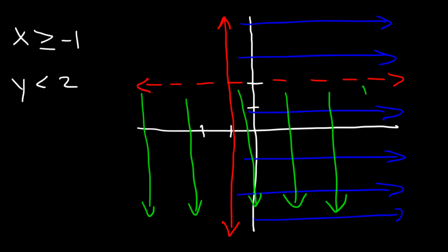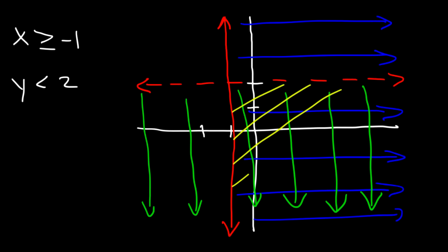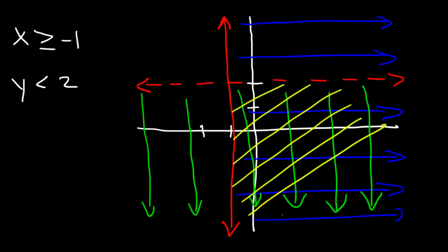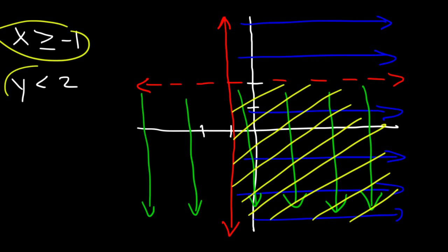We need to choose a region where the equation is true for both. The answer is the region where both colors are shaded. The equation is true for both equations in that region — where x is greater than negative 1 and y is less than 2. So, that's the answer.